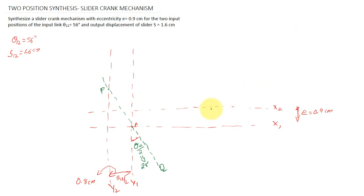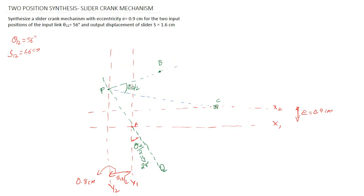Next, assume the position C of the slider. Join points P and C. Then draw the line PM at an angle of theta 1-2 by 2 — equal to this same angle. On this line PM, take an arbitrary point B, which will give you the required slider crank mechanism. Line AB is the required crank, and BC is the required connecting rod.